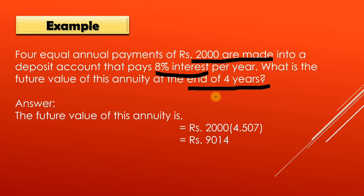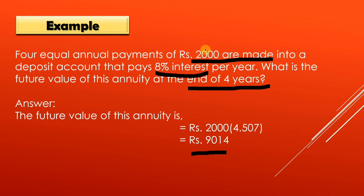You are earning 8% interest per year on those payments. By using the annuity formula, the future value comes to Rs. 9,014. So although you are depositing a total of Rs. 8,000 over 4 years, at 8% interest per year you will receive a future value of that annuity as Rs. 9,014.